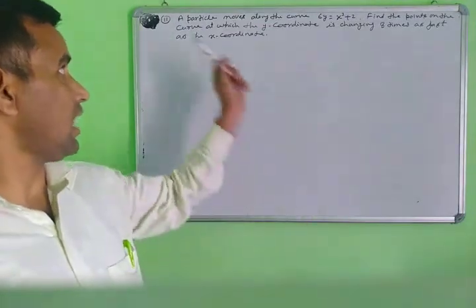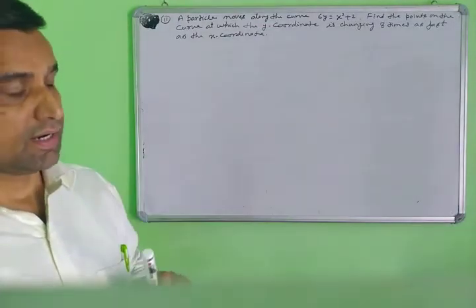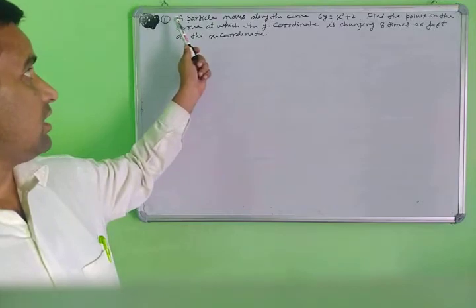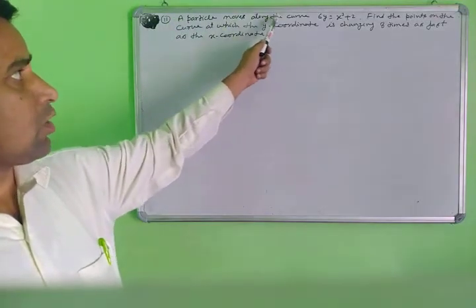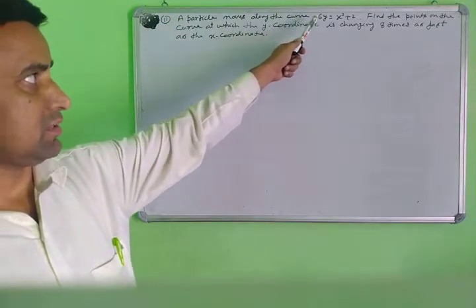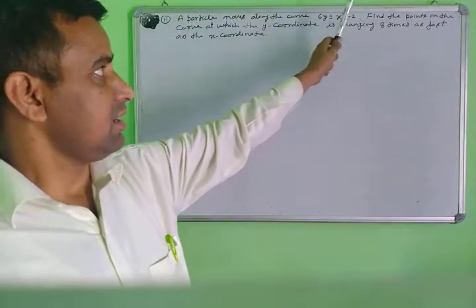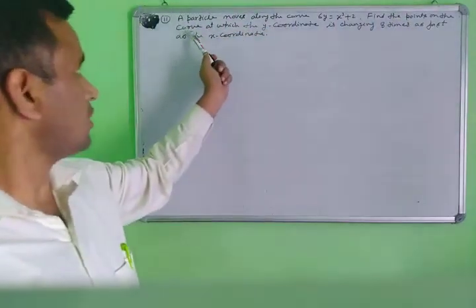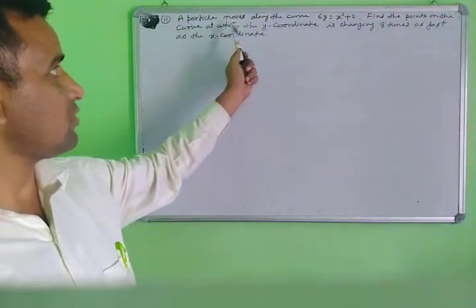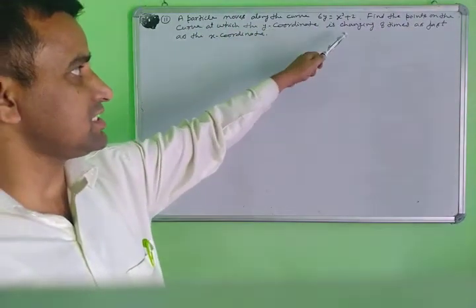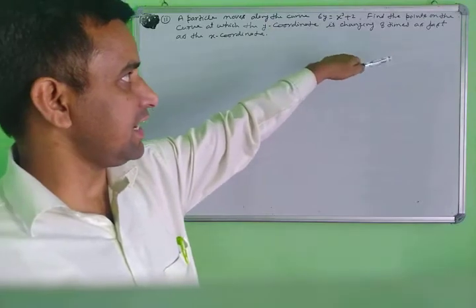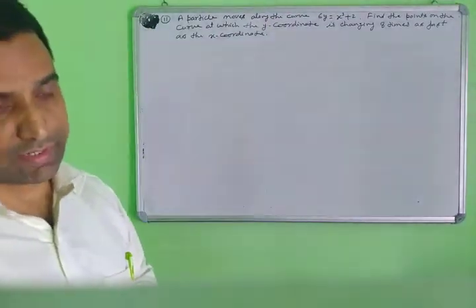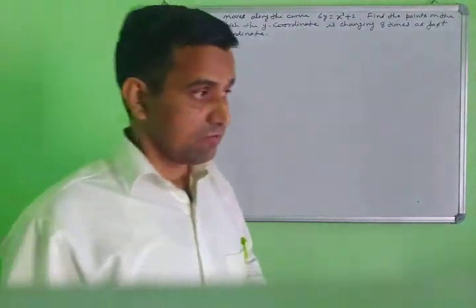Question number 11. A particle moves along the curve. The curve is given. Find the points on the curve at which the y-coordinate is changing as fast as the x-coordinate.